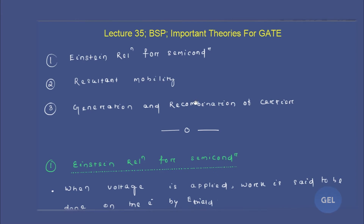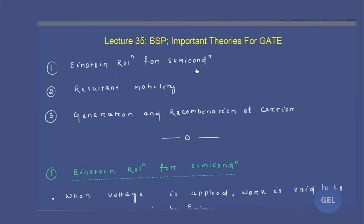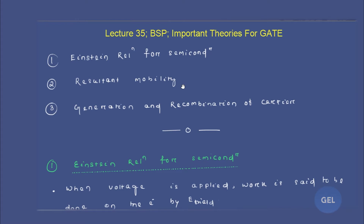Welcome to this GATE ESC lecture — lecture number 35 of EDC. We're still in the first module of basic semiconductor physics, and this is a new chapter on important theories for the GATE exam. This video lecture is extremely important from a GATE point of view. It is also the last video lecture for basic semiconductor physics. After this, we move to the second module: PN junction. The topics we'll cover are: Einstein relation for semiconductors, resultant mobility concept, and generation and recombination of carriers.